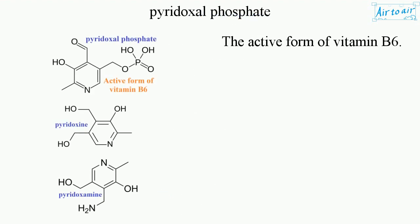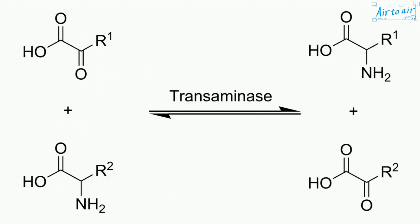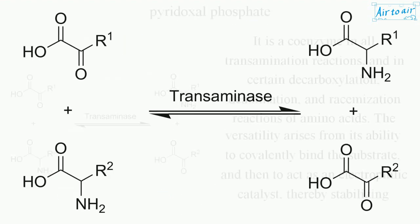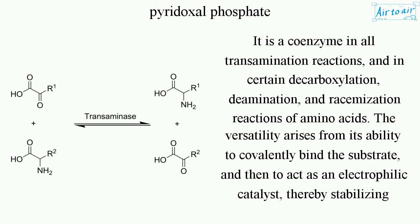Pyridoxal phosphate is the active form of vitamin B6. It is a coenzyme in all transamination reactions and in certain decarboxylation, deamination, and racemization reactions of amino acids.